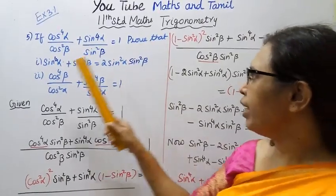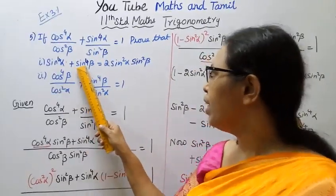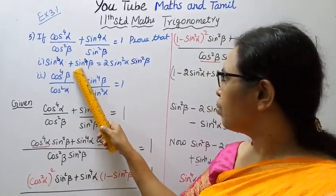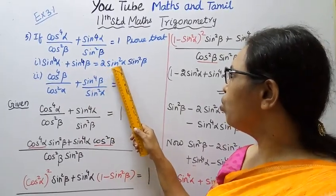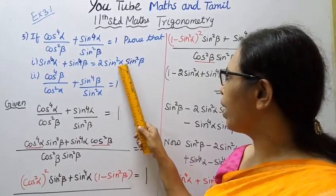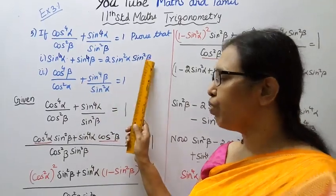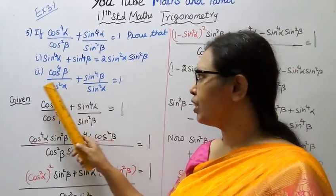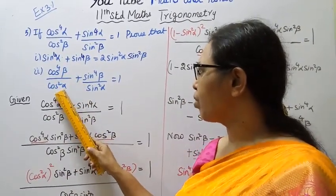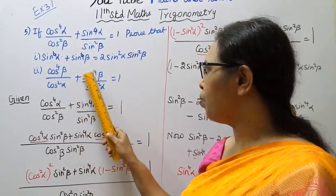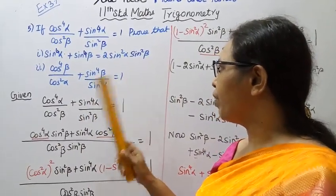We need to prove that sin power 4 alpha plus sin power 4 beta equal to 2 sin square alpha sin square beta. That is the first subdivision. Second subdivision: cos power 4 beta by cos square alpha plus sin power 4 beta by sin square alpha equal to 1.